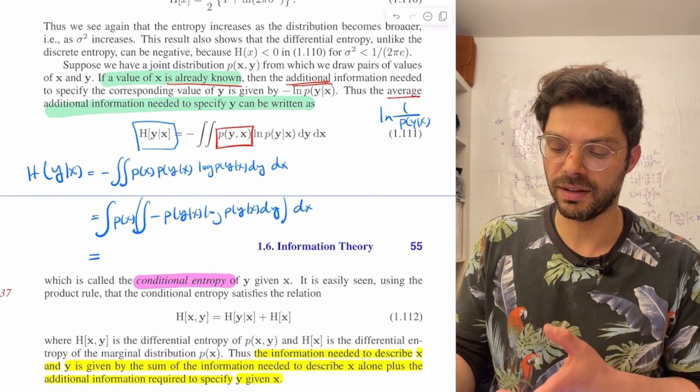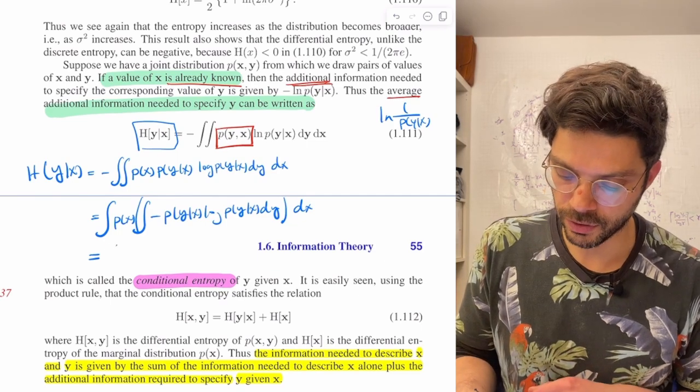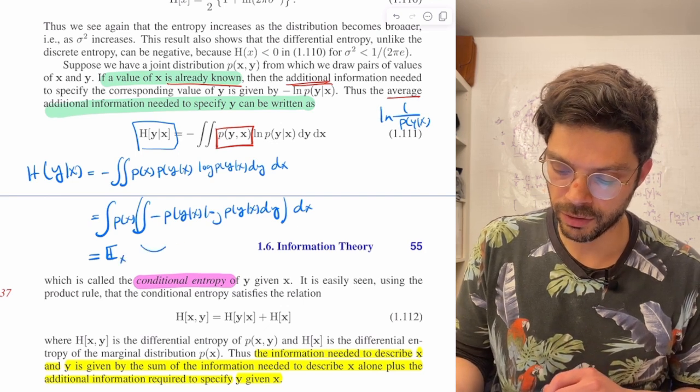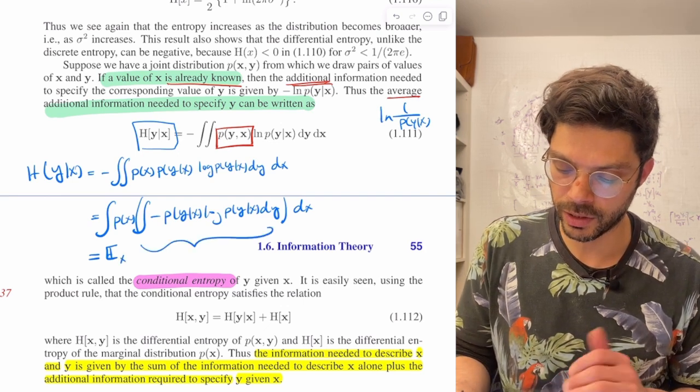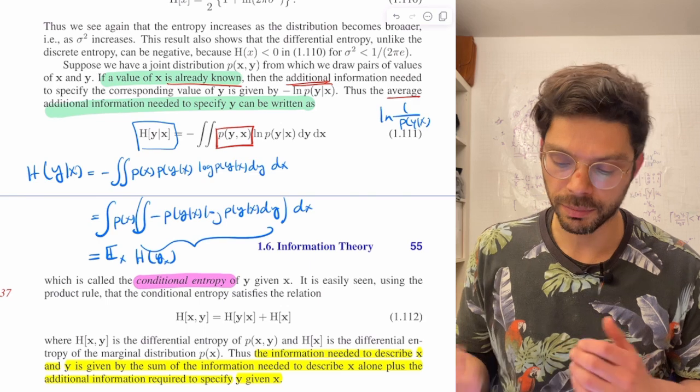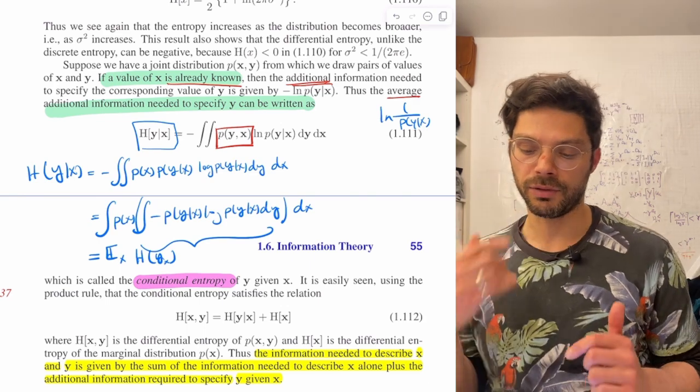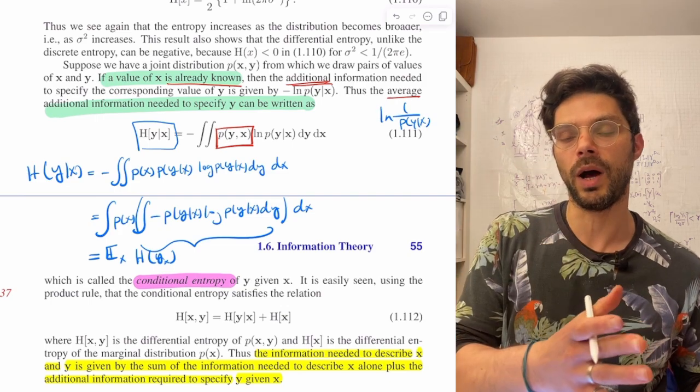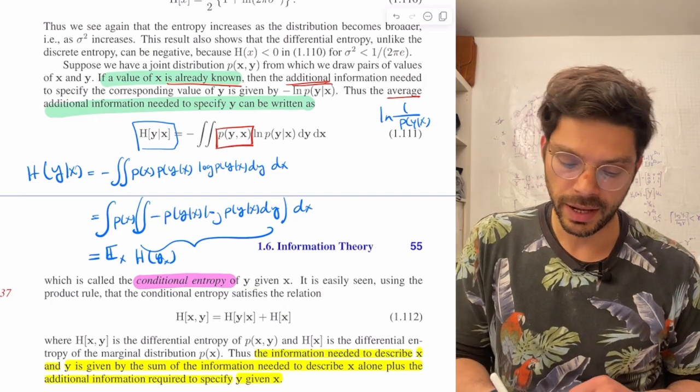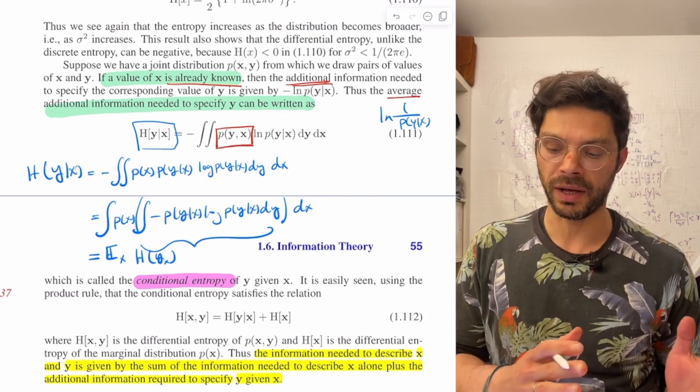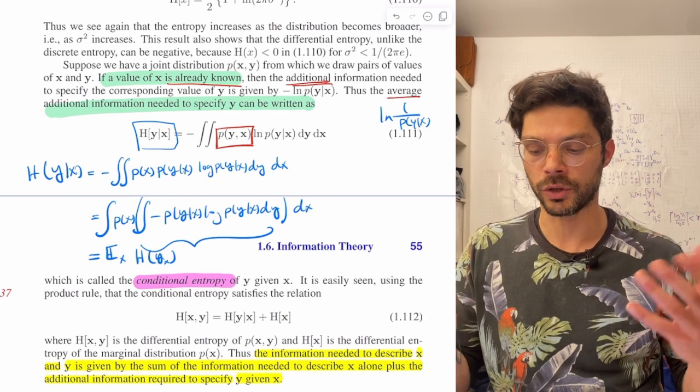Then this is just the same as p of x times minus p of y given x log p of y given x dy, and then this whole thing is dx. So this is the average over x of this quantity, which we can call h of y given a particular x. This quantity in the brace is the entropy of the distribution on y given a particular value of x, and then we average over the different values of x to get our overall conditional entropy.